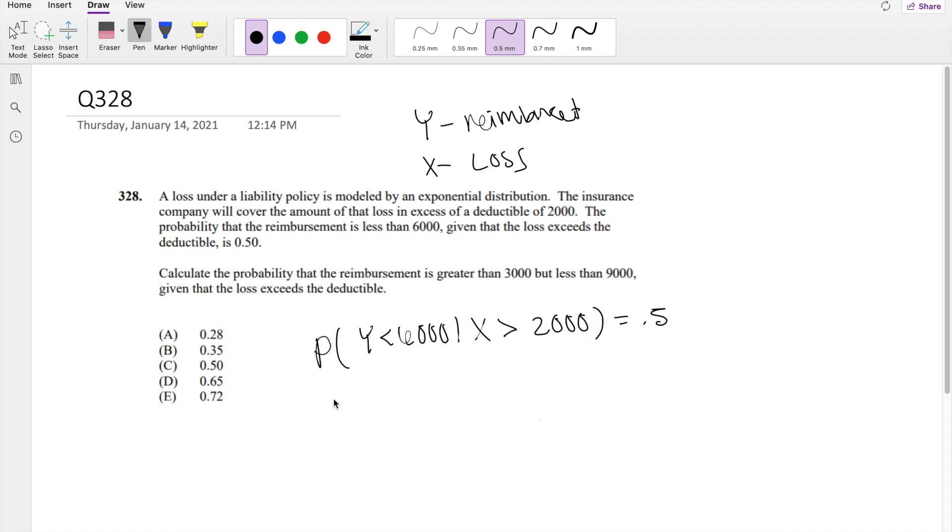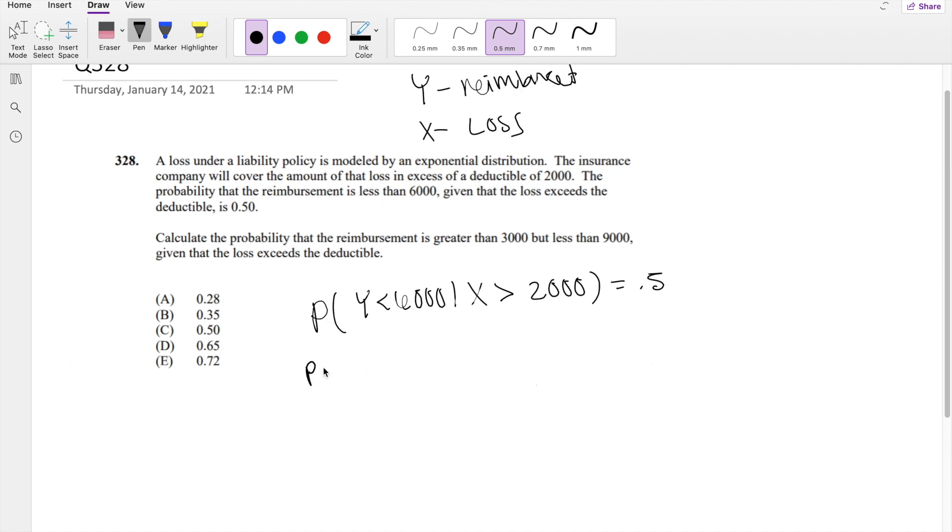We know from the conditional probability formula, this is equal to probability that Y is less than 6,000 and X is greater than 2,000, divided by the probability that X is greater than 2,000.